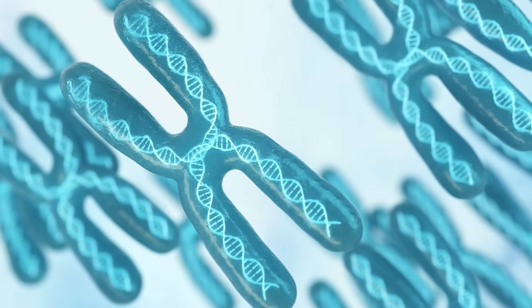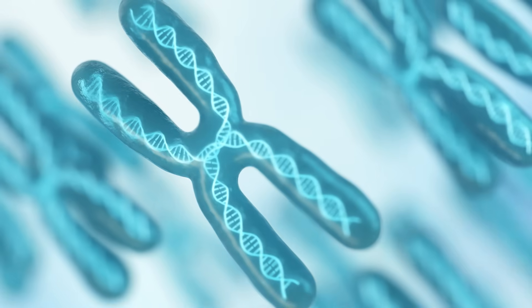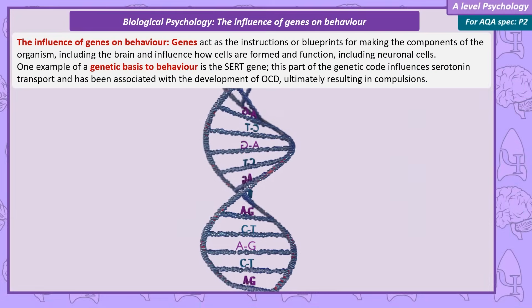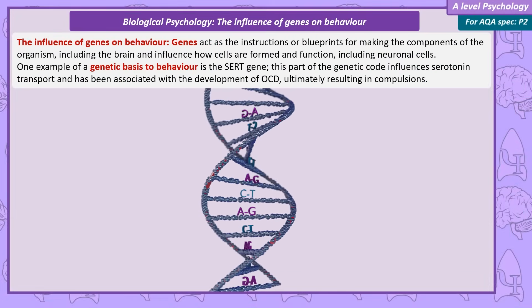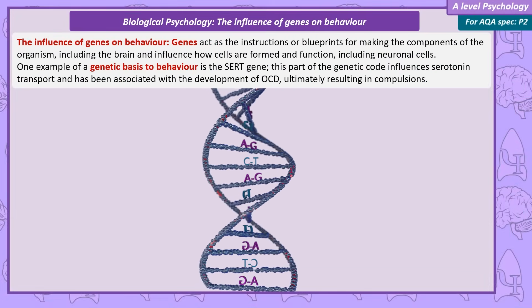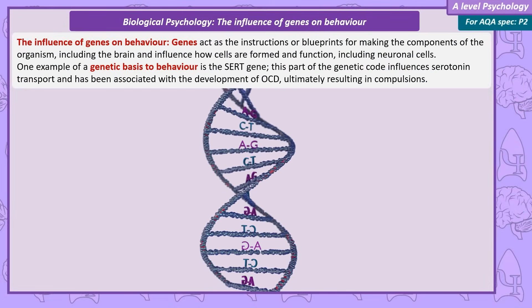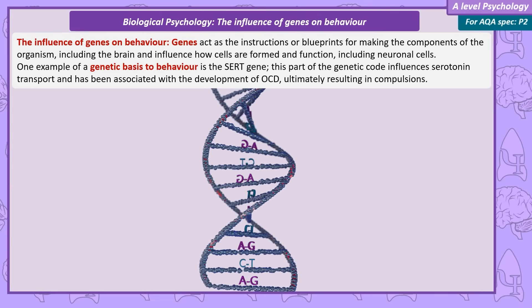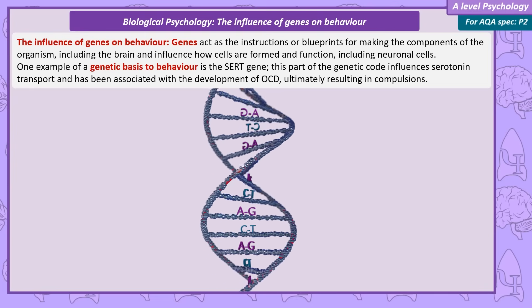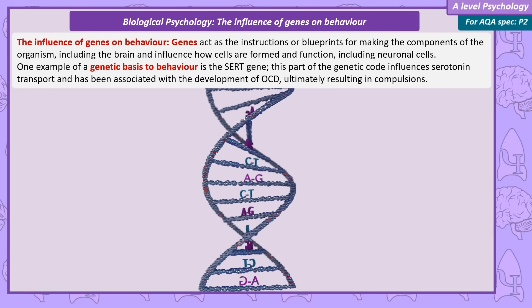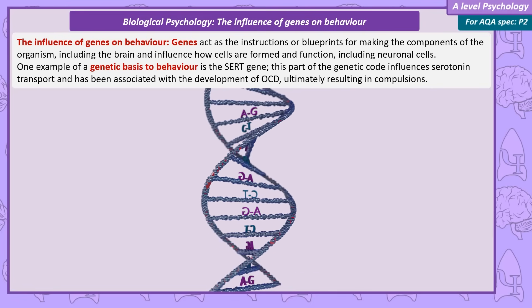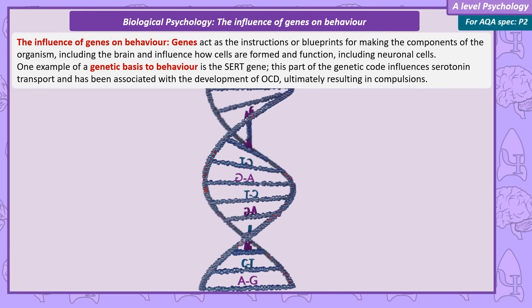The influence of genes on behaviour. Going to an even smaller biological structure, we can talk about how genes influence behaviour. DNA is the biological structure, and genes are sequences on the DNA. Our genes instruct how our cells are formed and function. For example, there are a range of candidate genes that have been associated with OCD. One important example is the SERT gene, which influences the serotonin transport we've just covered.